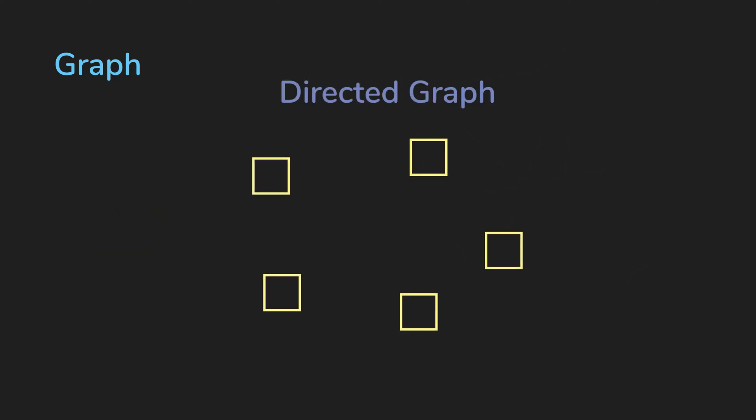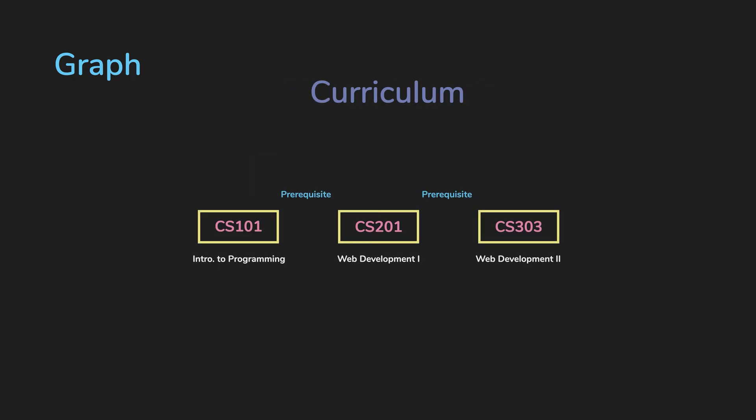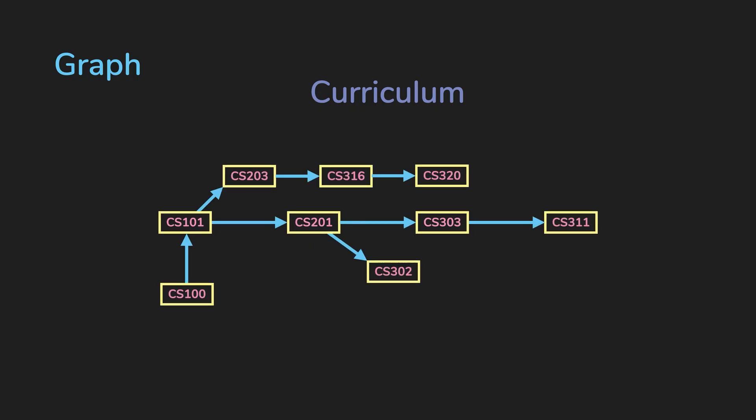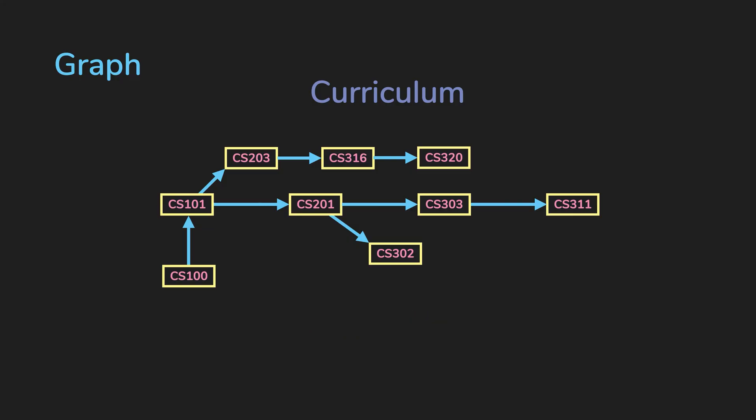For directed graphs, they're very useful to model hierarchy or constraints. For example, some university courses have prerequisites, you have to take certain courses before taking advanced courses. So sometimes they can get complicated. Modeling your data in a directed graph will allow you to run algorithms to figure out things like, is it possible to take this course? Maybe the people who designed the curriculum screwed something up, and you can never get the right prerequisite for a course, like if there is a dependency cycle.